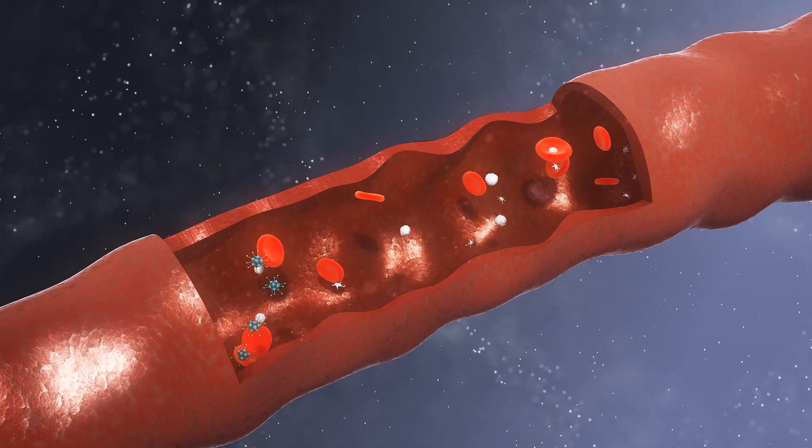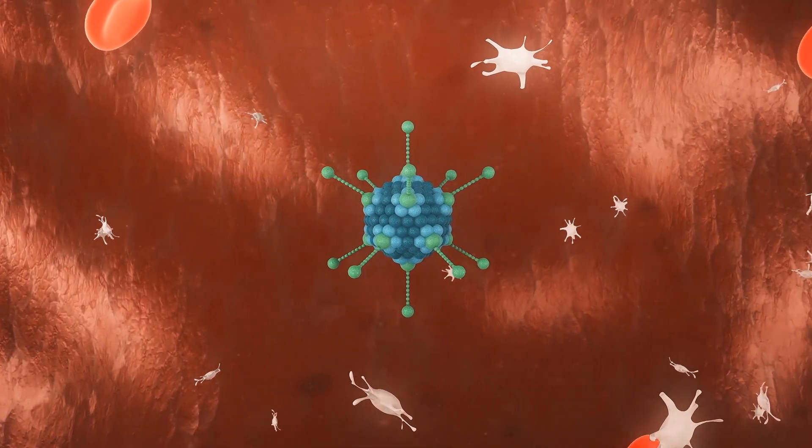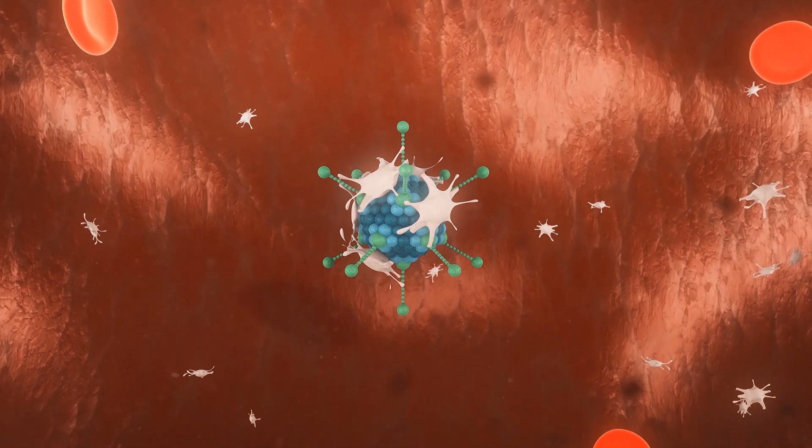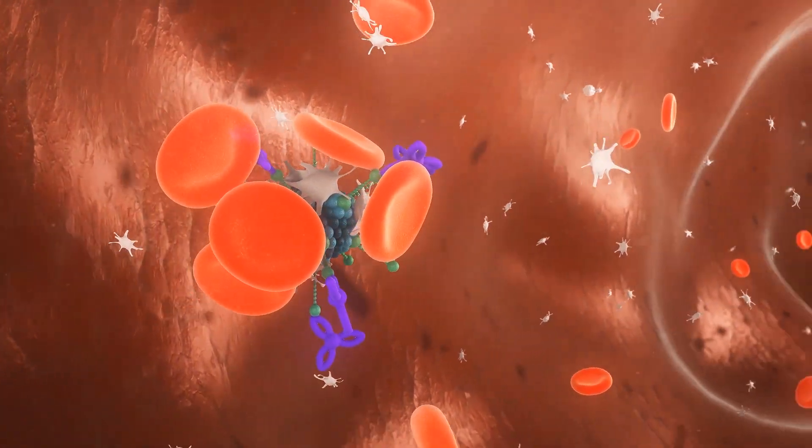The new study found that if the vaccine enters the bloodstream, it can attract a type of protein called platelet factor IV. From there, in extremely rare cases, the body's immune system can confuse platelet factor IV for the virus vector and release antibodies to attack it.